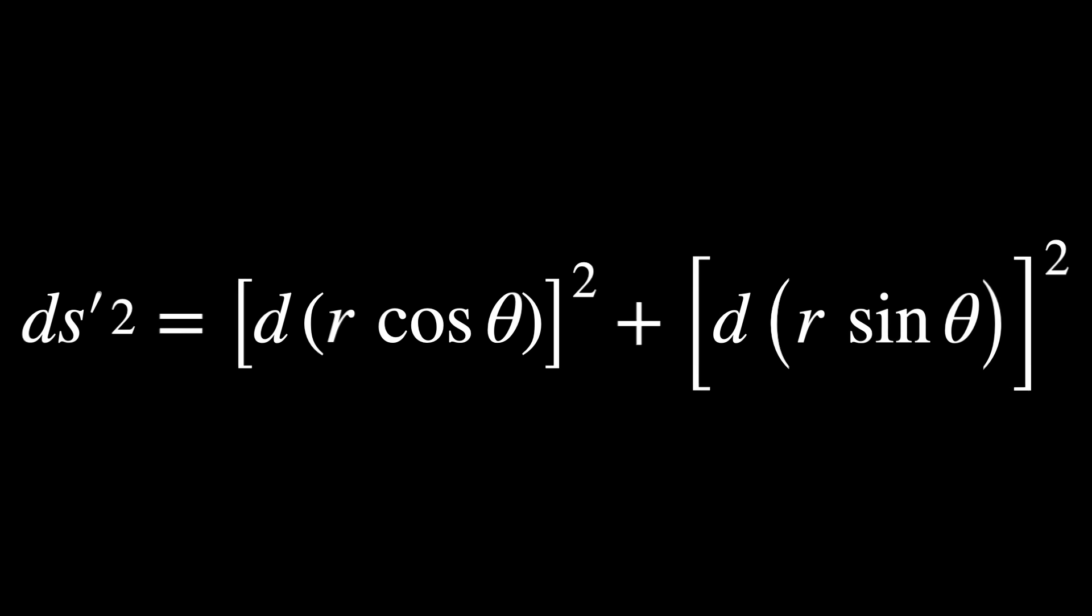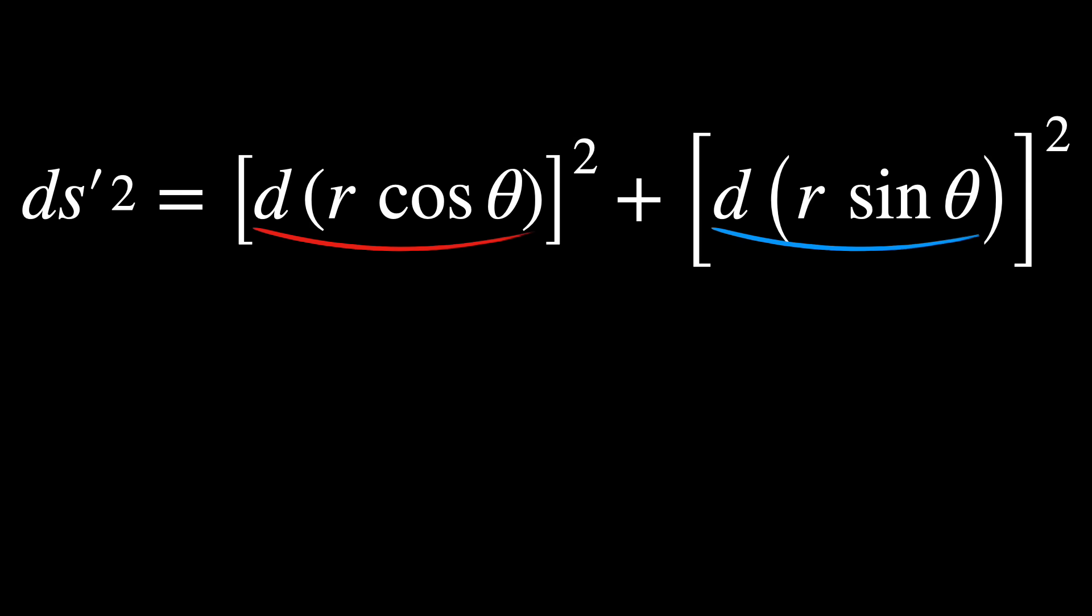Going back to our metric, dx squared plus dy squared, we can use the substitution for polar coordinates in it. But what do we do with these guys now?